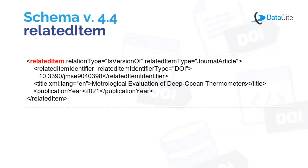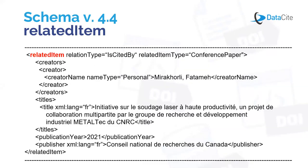Here's another example — a paper published in a series that is a reprint of an article first published in a journal. The related item describes the original journal article and can provide the DOI of the journal article, the title, and its publication information. We have one last example for related item: it shows how citation information of a resource related to the one being described can be included in the metadata. In this example, there is no related item identifier, but it includes important citation information: creator, title, publication year, and publisher.